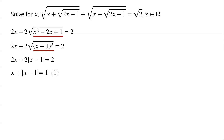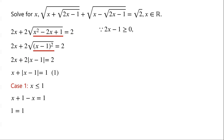We divide the problem into two cases. Case 1: if x is less than or equal to 1, then the equation becomes x plus (1−x) equals 1, that is 1 equals 1. So all x which are less than or equal to 1 satisfy the equation. From the original equation, 2x−1 must be greater than or equal to 0, so x must be greater than or equal to one half. Putting these together, x is greater than or equal to one half and less than or equal to 1.